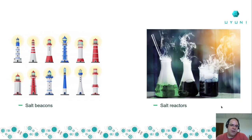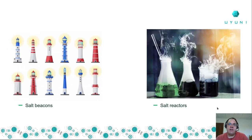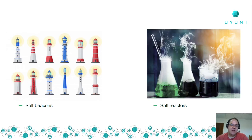Advanced capabilities include Salt Beacons and Reactors. Beacons continuously inspect a system, and when they notice an event, they contact the Uyuni server so you can react. For instance, if someone tries to change a password or alter the configuration of a web server or database — not only disallow that, but react by sending you an email. Or if a system is down for more than one minute, react by sending a notification via PagerDuty. All of this is provided by Salt, Grafana, and Prometheus.